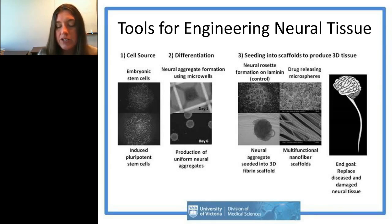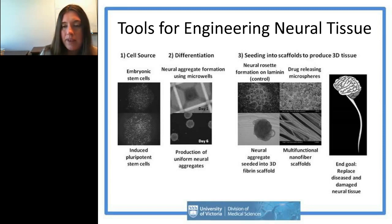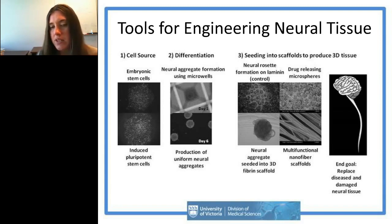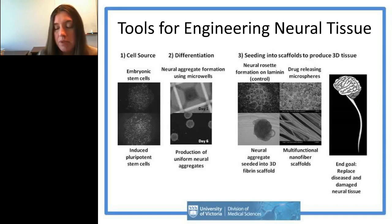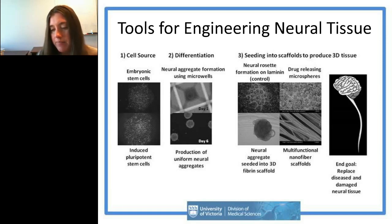My lab works with both mouse and human ESCs and iPSCs — all four of those cell lines. I'll talk about using micro-well differentiation techniques to standardize the differentiation process for our human cells. In terms of tissue engineering, we use a 3D biomaterial scaffold made from the protein fibrin, drug-releasing microspheres, and multi-functional nanofiber scaffolds. We combine these different cell types with different scaffolds depending on what areas of the nervous system we want to treat.